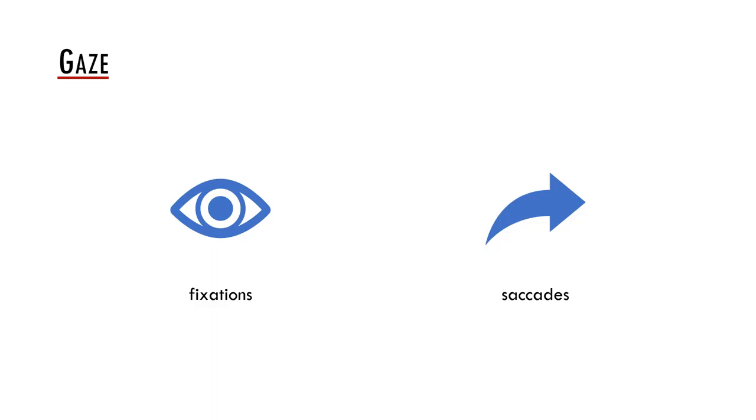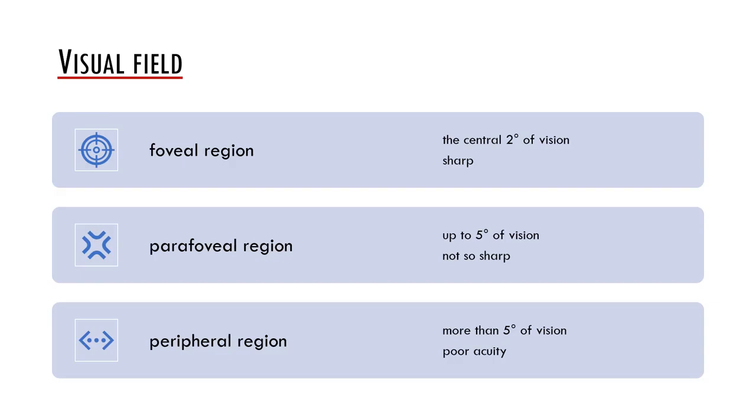One of the important questions is how much do we see during a fixation, because this may determine how much information we are able to extract and process via a fixation. We differentiate three main regions in the visual field. For reading and for many other cognitive processes, the foveal region is crucial because the part of the text which is in the foveal region is seen as sharp.